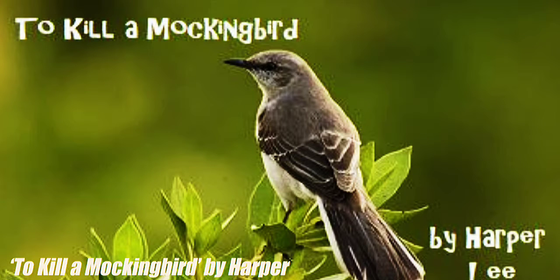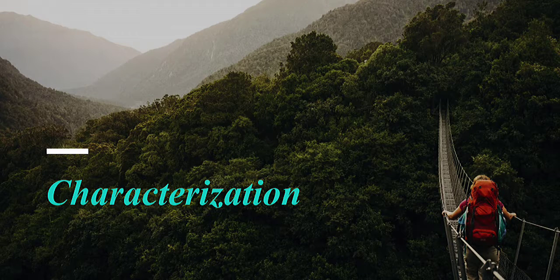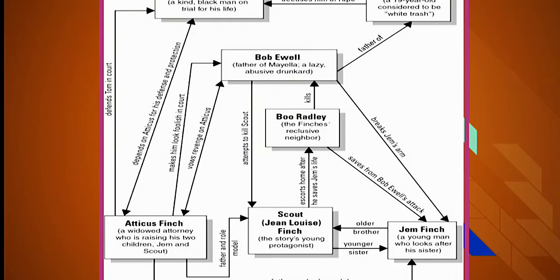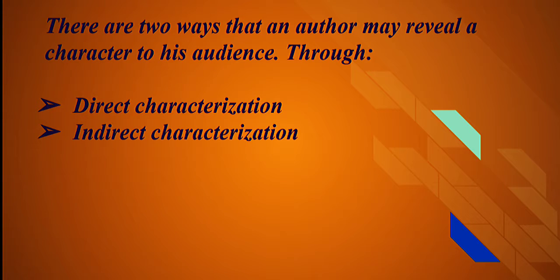Today we're going to be looking at the story To Kill a Mockingbird by Harper Lee. We're going to be focusing on characterization. Now to begin, let's talk about how the author reveals a character to their audience. The author may reveal a character through means of direct characterization or indirect characterization.